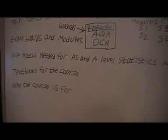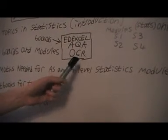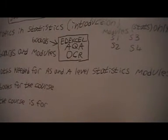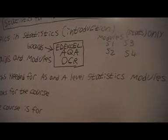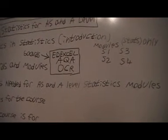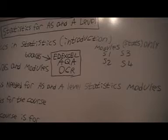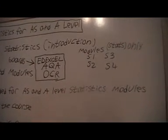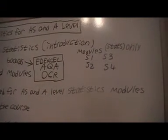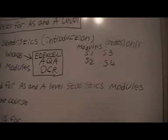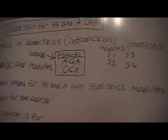Textbooks for the course. For the textbooks, we've got three exam boards: Edexcel, AQA and OCR. If you're following a particular exam board, I would recommend getting the newest books for that exam board under modules. Or if you just want a general book on statistics, just look for a nice thorough book that says it's for AS or A Level.